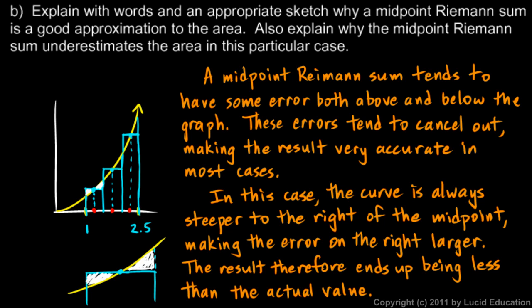In this case, the curve is always steeper to the right of the midpoint, making the error on the right larger. The result, therefore, ends up being less than the actual value. And again, being able to articulate this in words is helpful. It's not only helpful, it's a good indication that you actually do understand it.